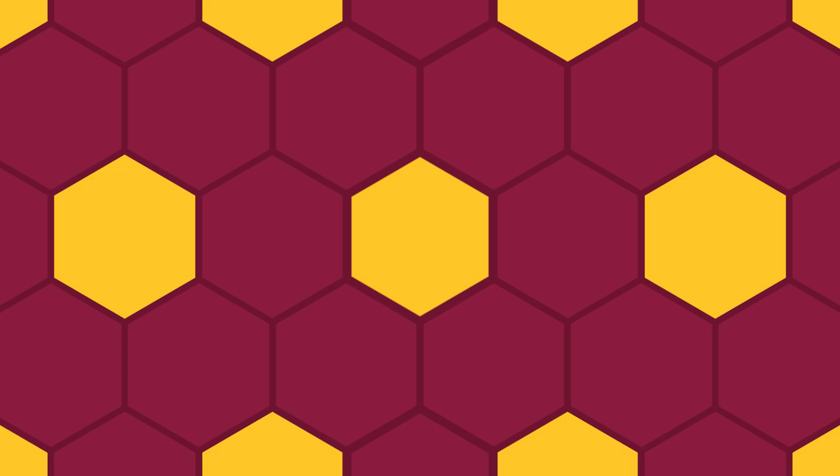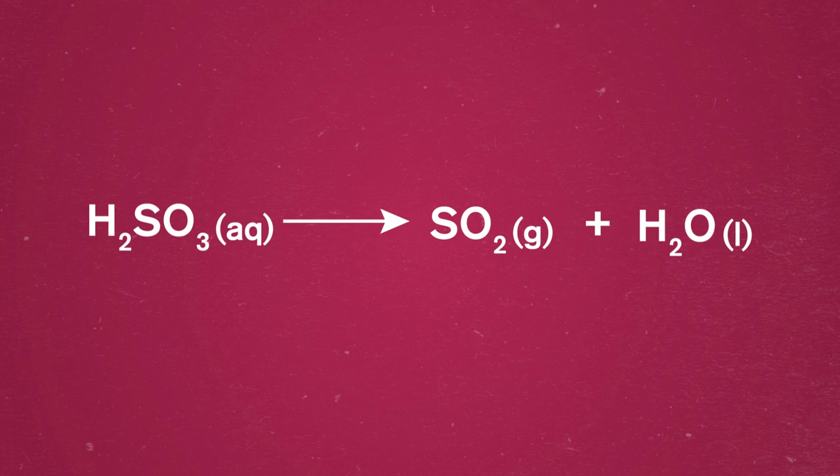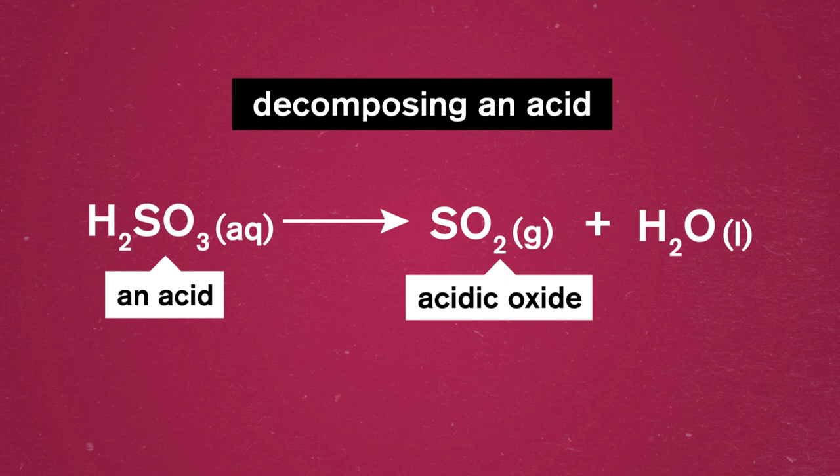But sometimes, it can be trickier and we might need to rely on our knowledge of other reaction types, like acid-based ones. If we were to reverse our previous example where we combined an acidic oxide with water to create an acid, we'd be decomposing an acid. The products would then be an acidic oxide and water. Step 3 accomplished!